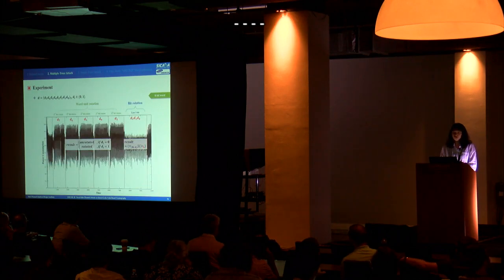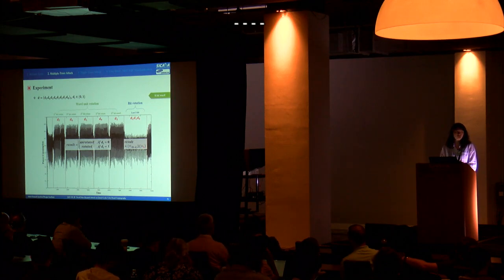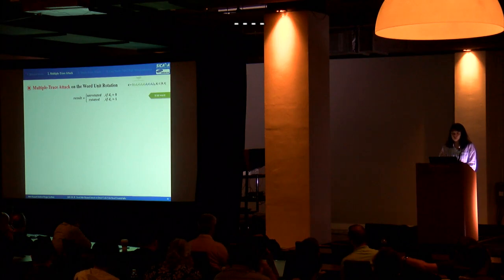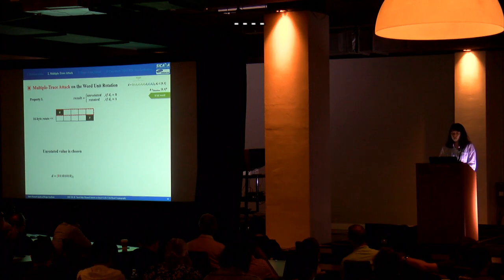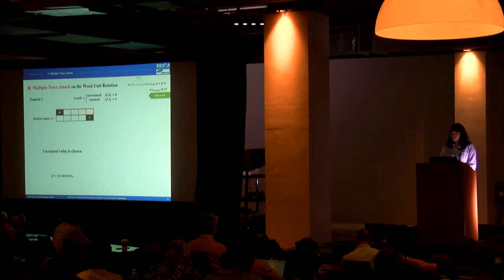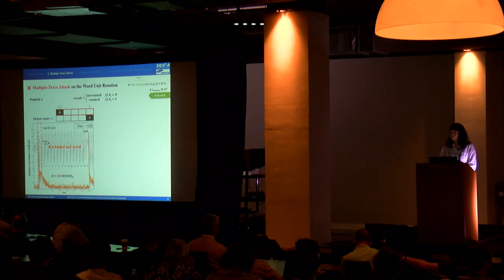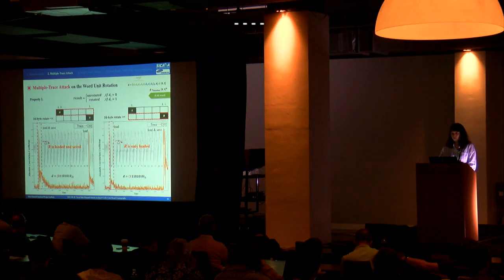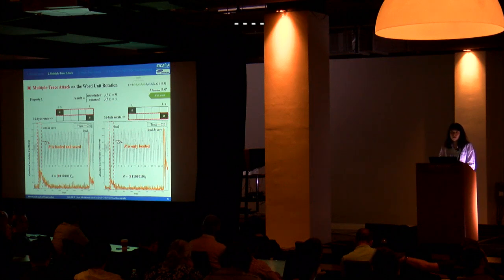The occurrence position of power consumption associated with the intermediate value is determined according to the secret bit value. This is a power consumption trace of the constant-time multiplication. Since software implementation is considered, power consumption is assumed to be affected by the Hamming weight of the intermediate value. We first categorize properties of the word-unit rotation. For property 1: rotation is always performed, and the unrotated value is chosen when Di is 0, so R is rotated and saved in the first loop. When Di is 1, the rotated value is chosen, so R is only rotated in the first loop. Therefore, we can find Di by identifying whether a high correlation with R occurs sequentially twice in the first loop.